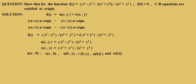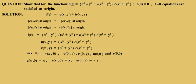u(x,0) will be obtained by putting y = 0 in u(x,y), and v(0,y) will be obtained by putting x = 0 in v(x,y). So: u(x,0) = x³/x² = x; v(x,0) = x; u(0,y) = −y³/y² = −y.